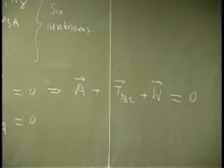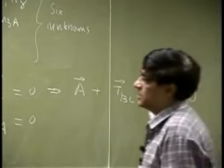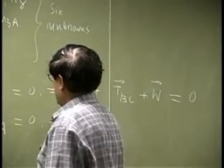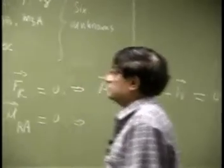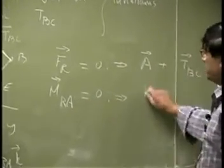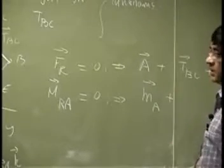So every force you have in your problem, you simply add it and that should go to zero. Then for the moment, it shows the point A, we already have a couple which is MA, you put it right at the beginning.